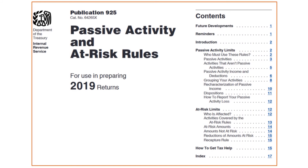IRS Publication 925 covers passive activity limits, who must use these rules, passive activities, activities that are not passive activities, passive activity income and deductions, how you group your activities, how you can re-characterize your passive income, dispositions, and how to report your passive activity loss. It also covers at-risk limits, who is affected, activities covered by the at-risk rules, at-risk amounts, amounts that are not at risk, and reductions of amounts at risk.